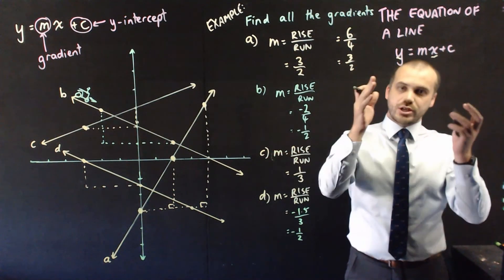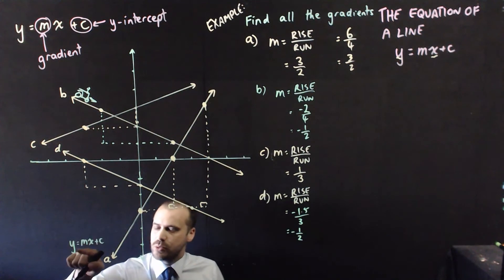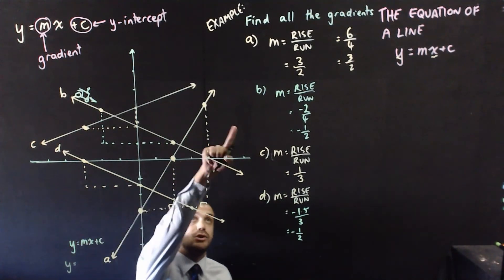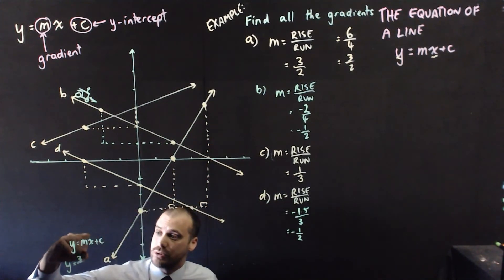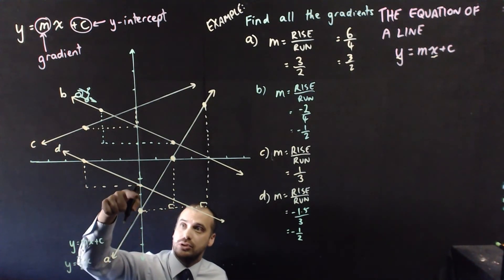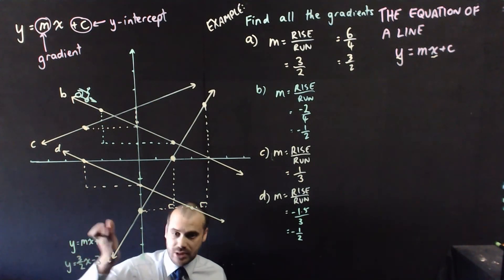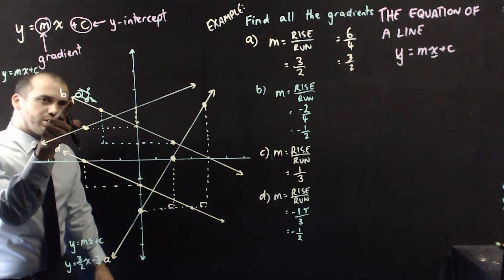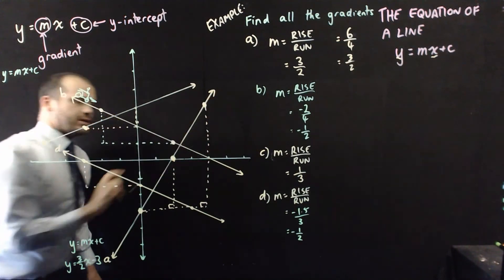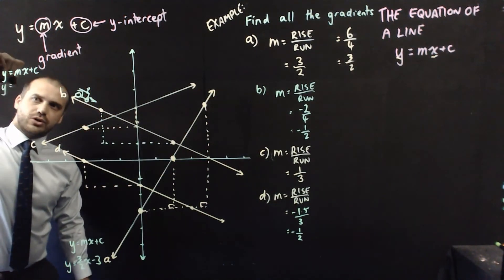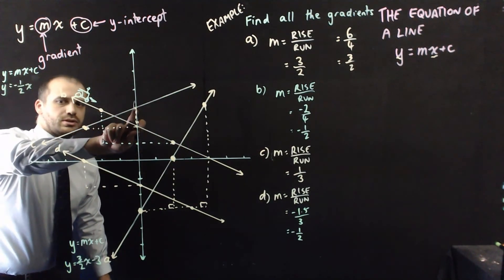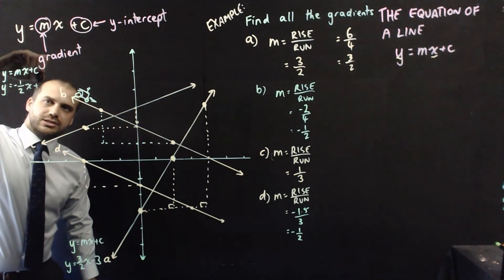It would be really easy to find the equations of those lines. For line A: y equals mx plus c, gradient is 3 over 2, and the y-intercept — looking at the graph — is negative 3. So the equation of line A is y equals three-halves x minus 3. For line B: gradient was negative one-half, so y equals negative one-half x, and the y-intercept is 2, giving y equals negative one-half x plus 2.